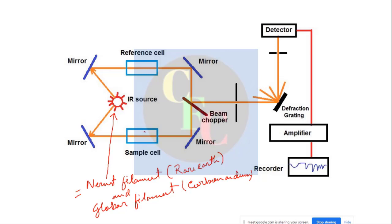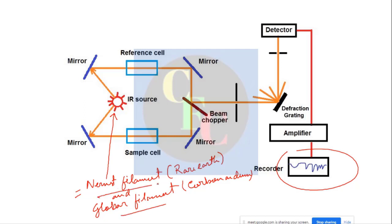The reference is important to subtract out any noise that is coming. Both beams then go to the detector, and you get a recorded spectrum. The real instrument is much more complicated, but this is just a schematic diagram. We have to remember what the sources of IR are in an IR instrument.